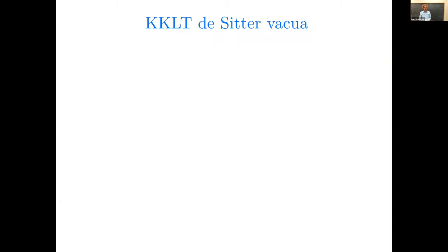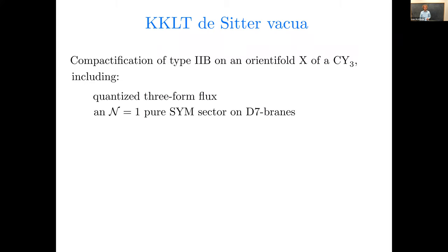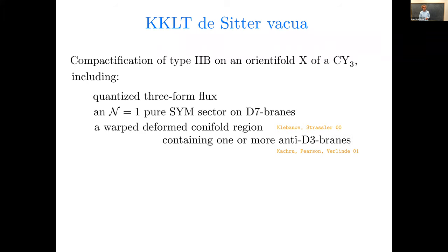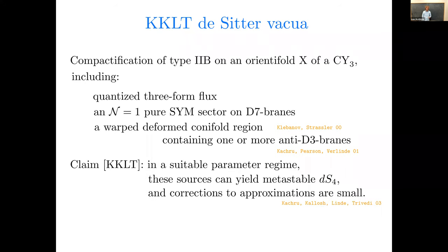Okay, so first, a very brief overview of the KKLT construction itself, which is familiar perhaps to many of you, but let me state everything anyway. The KKLT proposal for making de Sitter vacua asks you to consider a compactification of type 2b string theory on an orientifold x of a Calabi-Yau threefold, and take this compactification to include the following things. Quantized three-form flux, an n equals one supersymmetric pure super Yang-Mills sector on a stack of d7 branes, or multiple stacks if there are multiple Kähler moduli, a warp-deformed conifold region, i.e. a Klebanov-Strassler throat region, that contains one or more anti-d3 branes. Then the claim of KKLT, their main point is that in a suitable parameter regime, these assumed sources can yield a metastable four-dimensional de Sitter vacuum, and the corrections to all the approximations that have been made are, it is claimed, small.